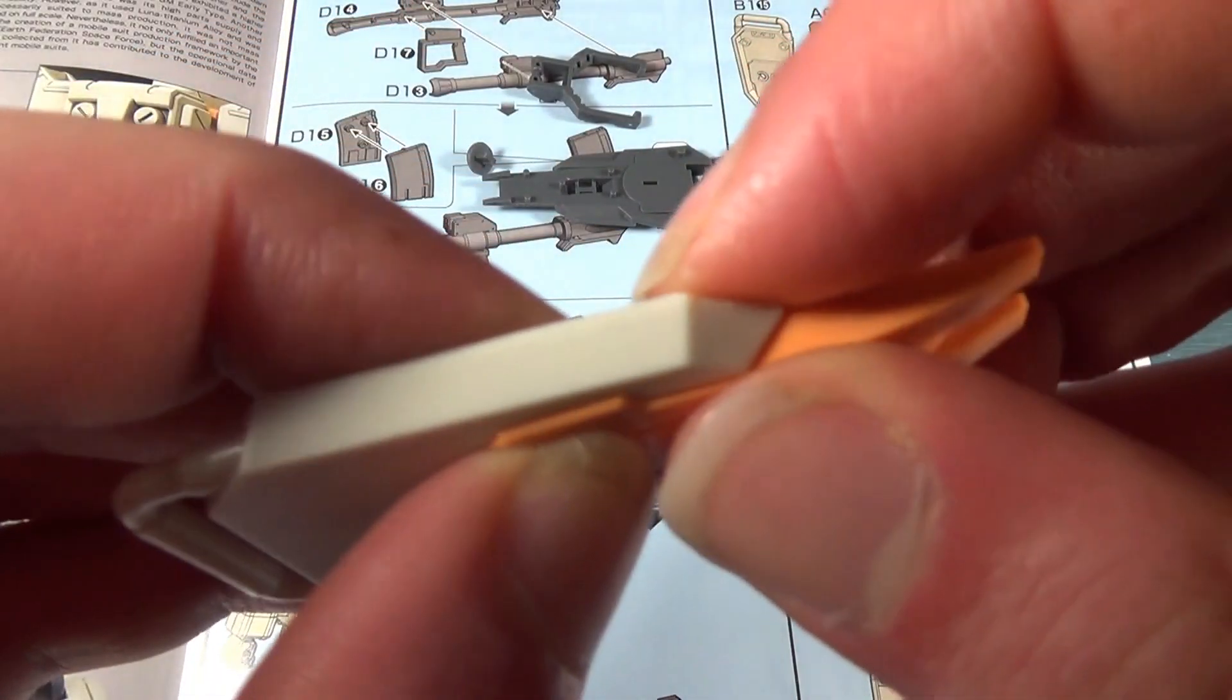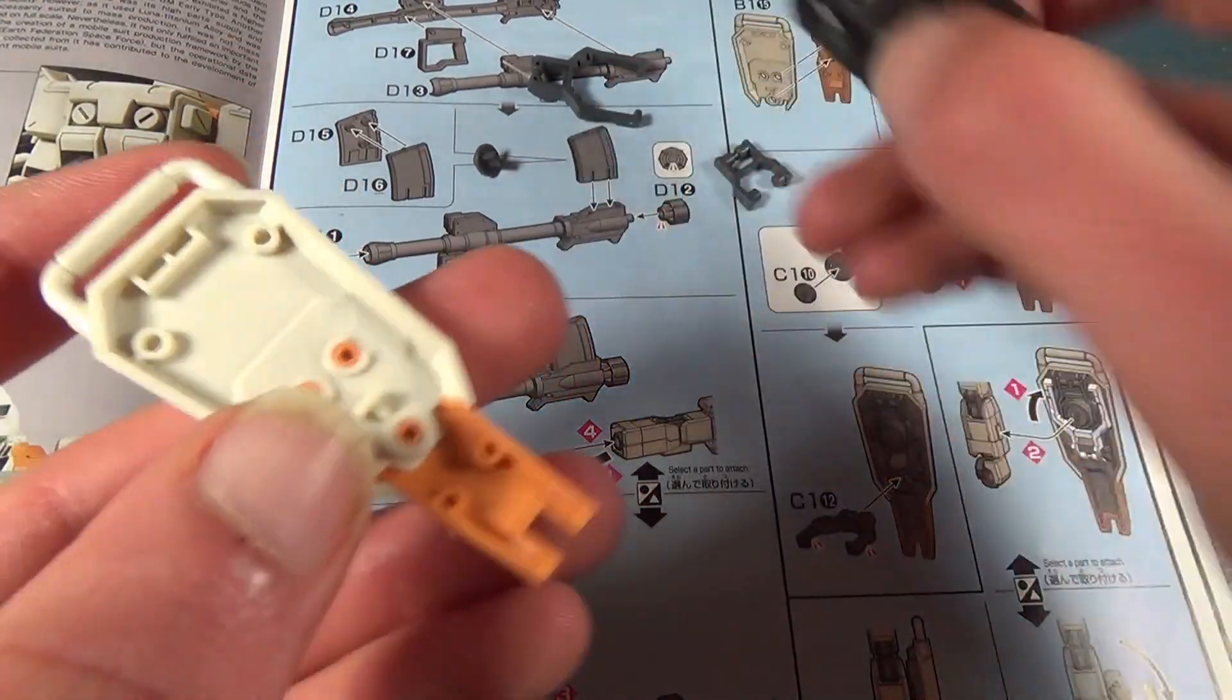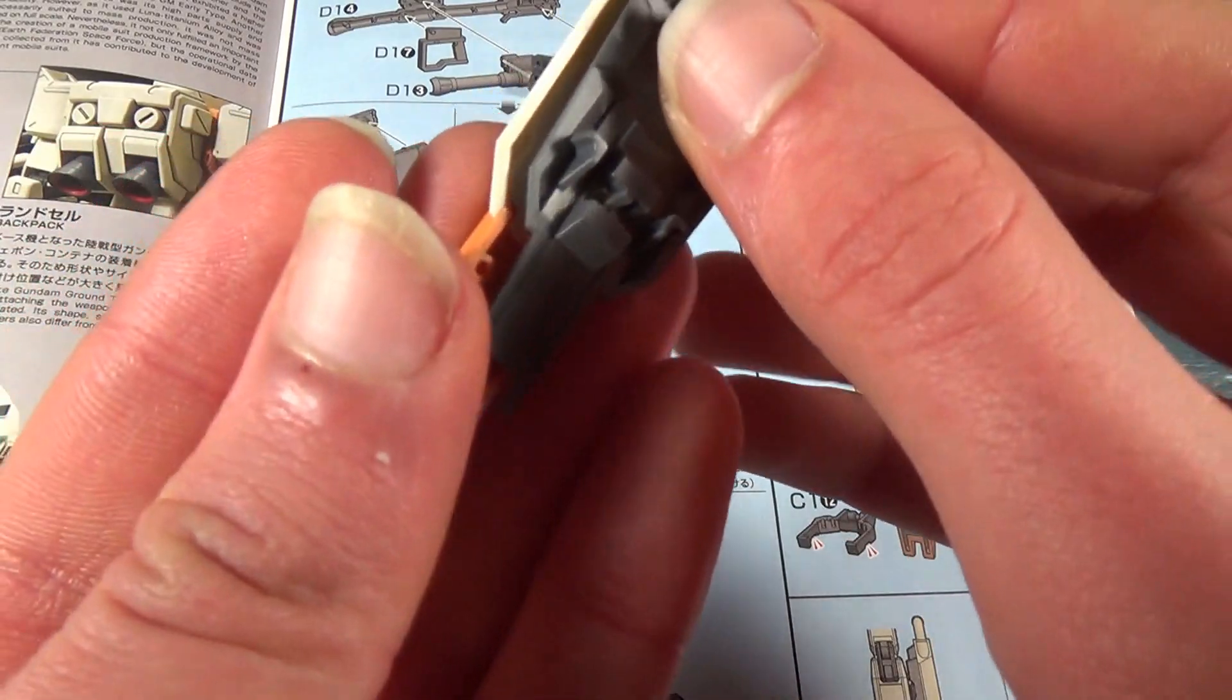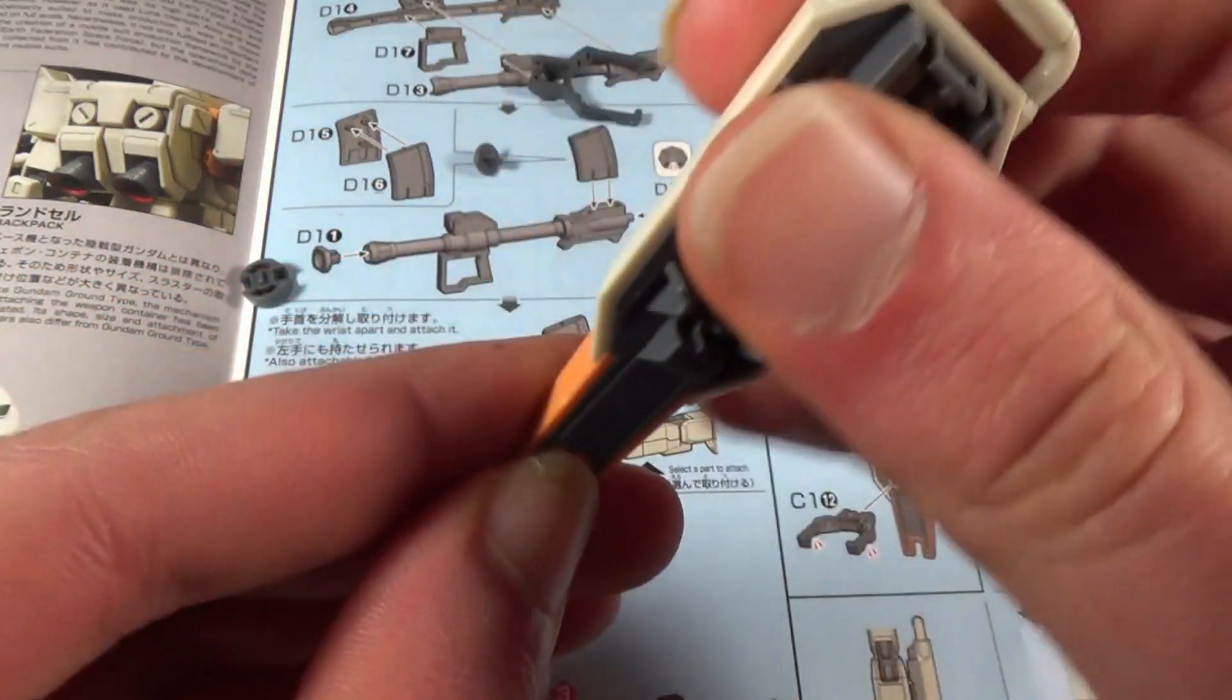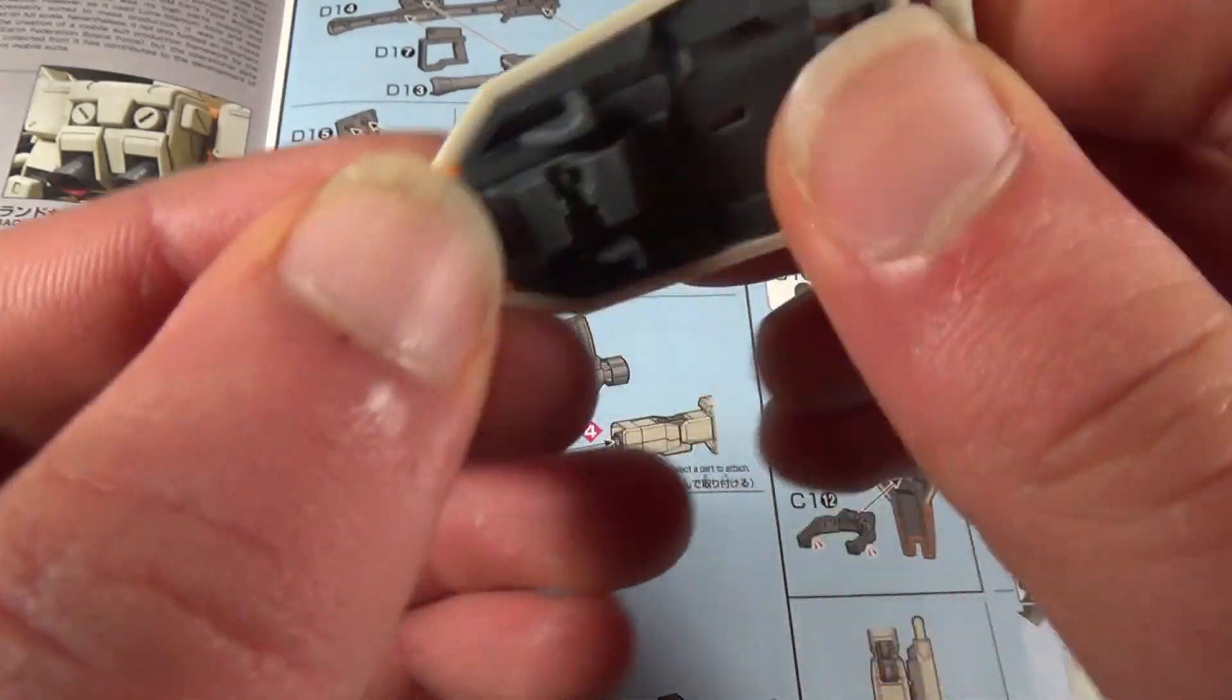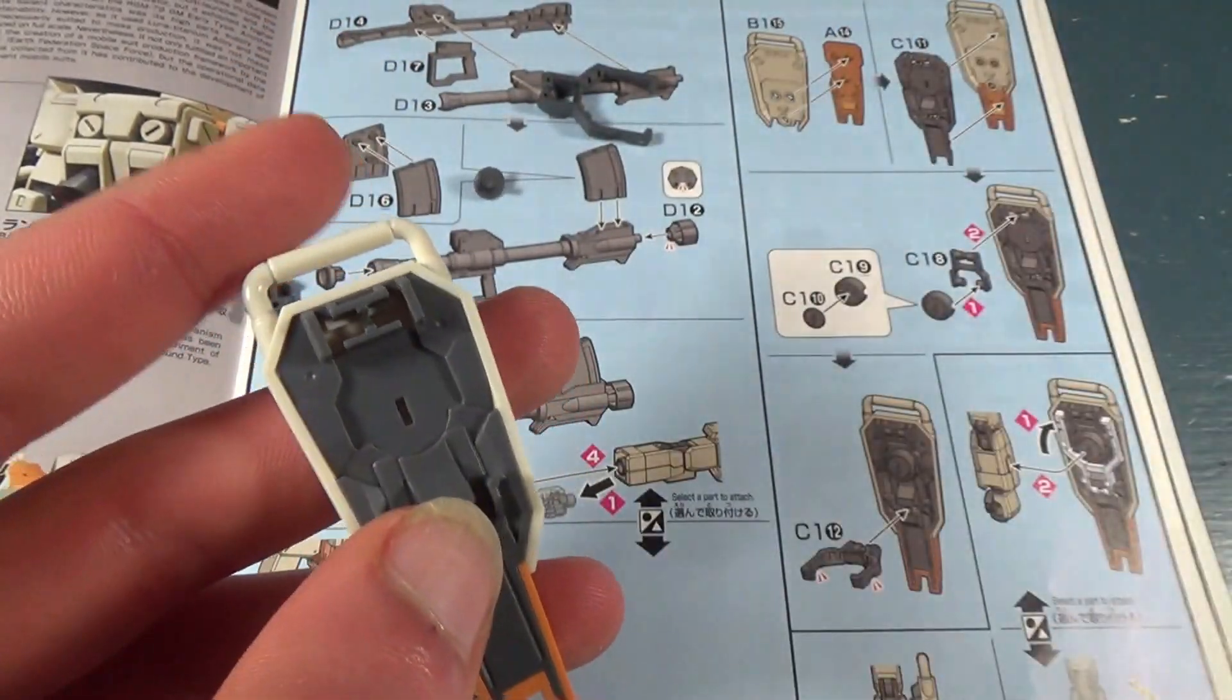And now to start on his final weapon, or rather his defense, we're going to put together these two pieces to start the shield. And then attach this gray piece to the underside. And I always like it when the shield on a high grade has a gray underside. It's not something you'll always see in high grades, but it's becoming more and more common nowadays, and I'm very happy to see that.